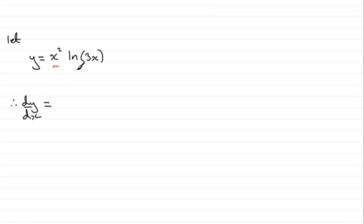We've got this x squared and we've got this natural log of 3x. And we should know that when we get two functions of x, like this, multiplied together, that to differentiate it we need to use the product rule for differentiation.